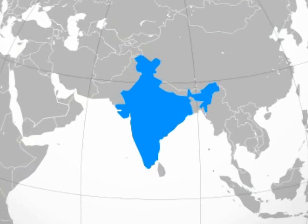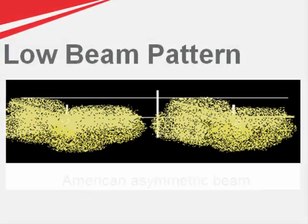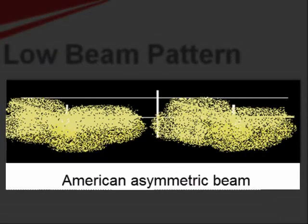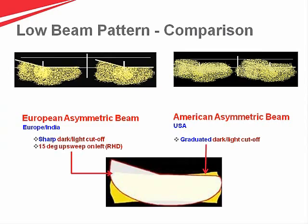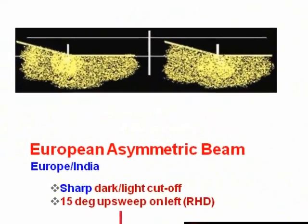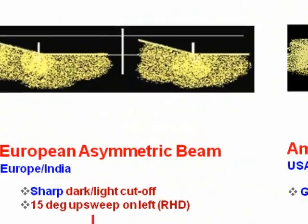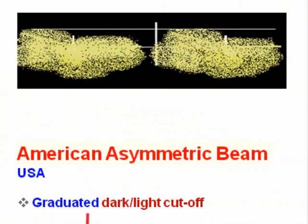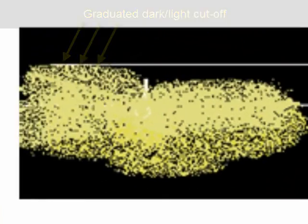The European asymmetric beam is used in India and some other countries as well. The other type is the asymmetric American beam. If you compare the European and American asymmetric beam side by side, you'll see a sharp cutoff in the case of the European asymmetric beam, but in the case of the American asymmetric beam the intensity varies and slowly dims.